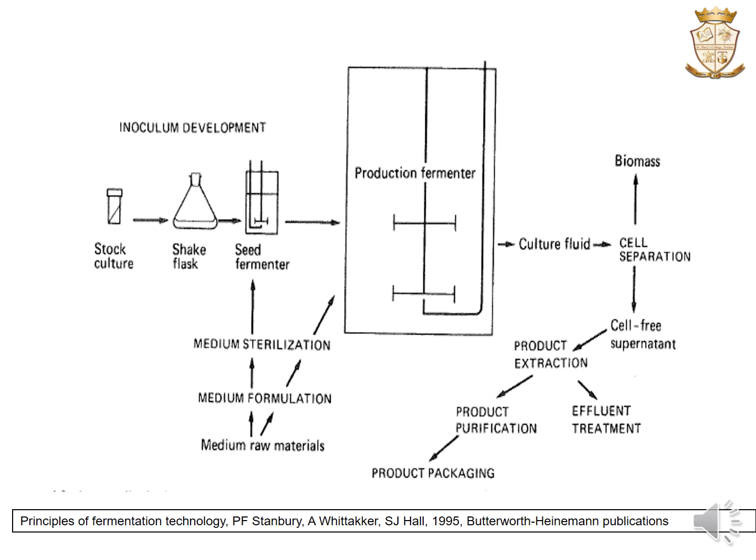This diagram shows the component parts of a fermentation. Using raw materials, the media will be formulated, sterilized, and used for the development of inoculum. The inoculum will be developed from a stock culture, inoculated into a shake flask, and further into a seed fermenter — a small fermenter used to make up the inoculum — which will then be inoculated into a production fermenter filled with sterilized media.